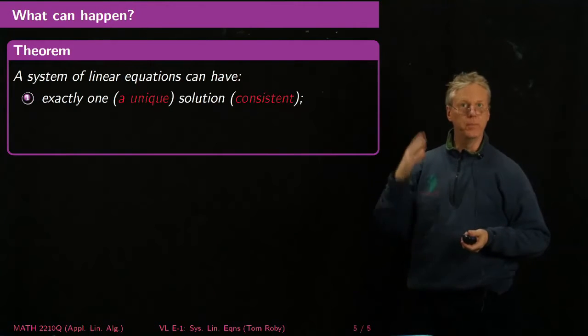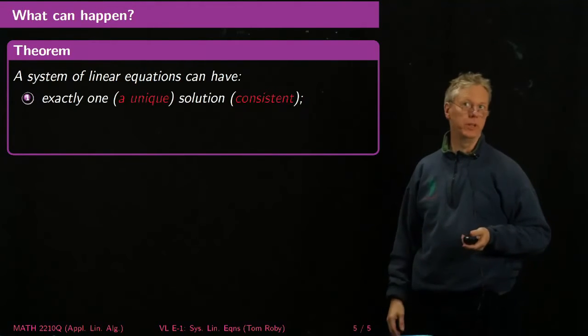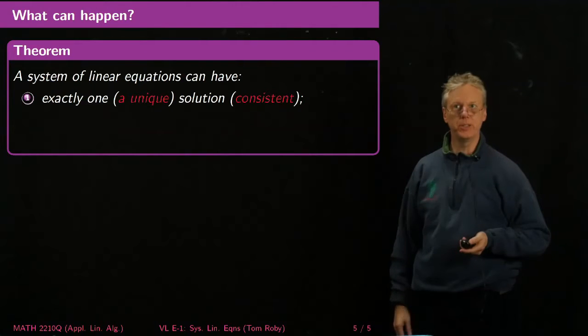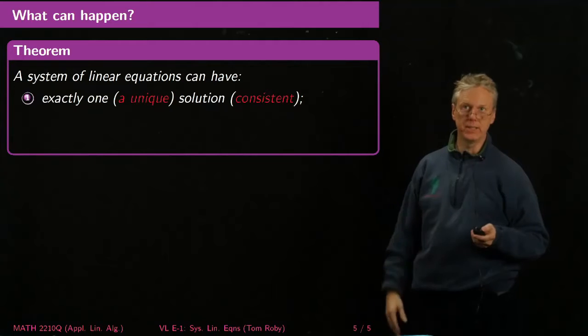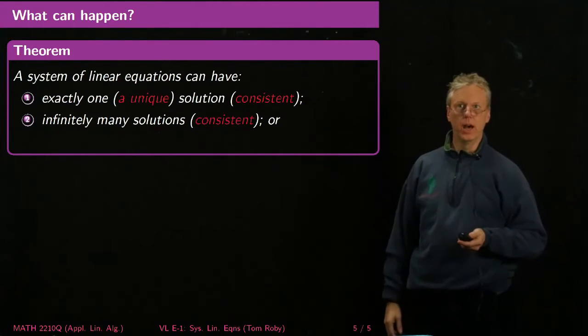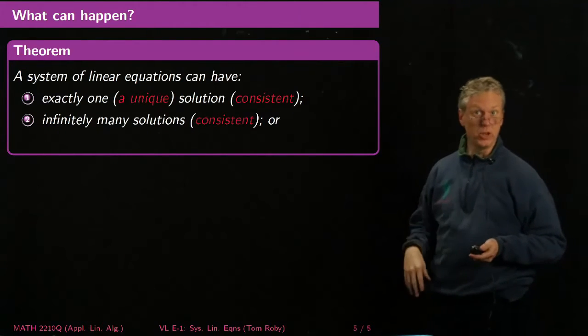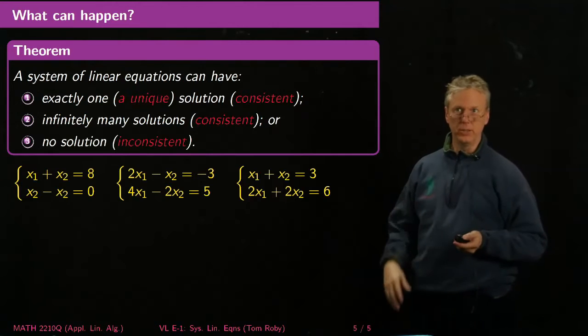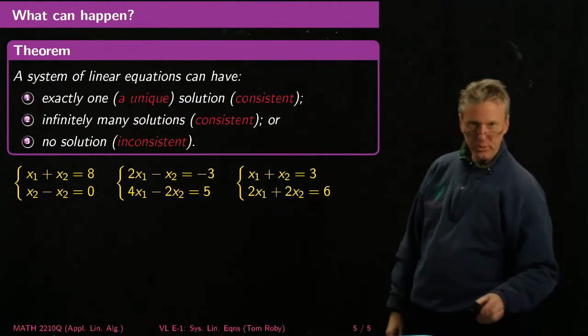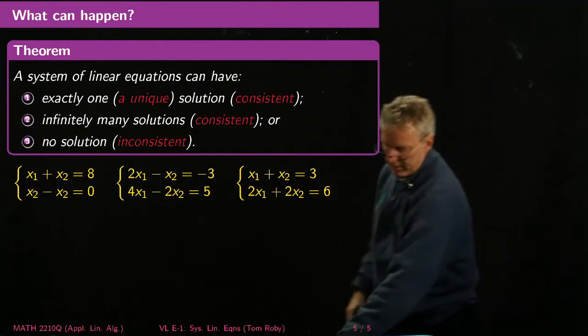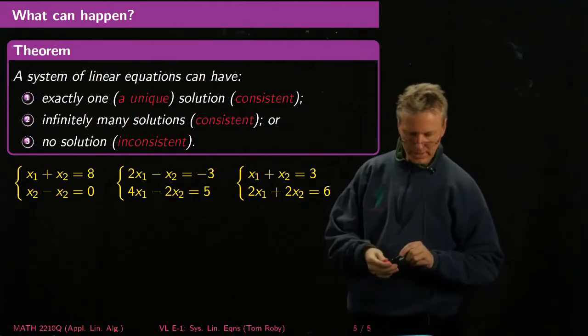So here's the theorem about what can happen with linear systems. So a system of linear equations can have either exactly one unique solution, and we'll say that's a consistent system. If it has infinitely many solutions, it's also consistent, but it's not unique, and it could have no solution, which would be inconsistent. And so here are three examples now where we want to take a quick look at what the possibilities are.